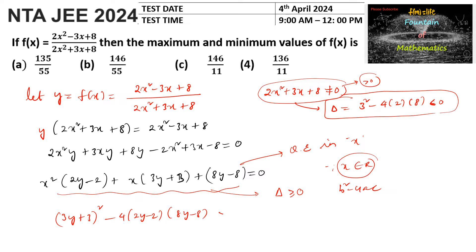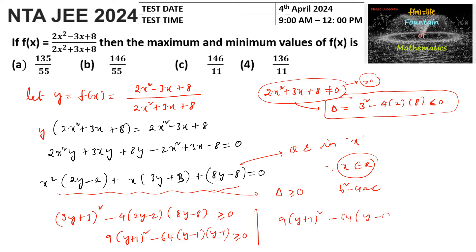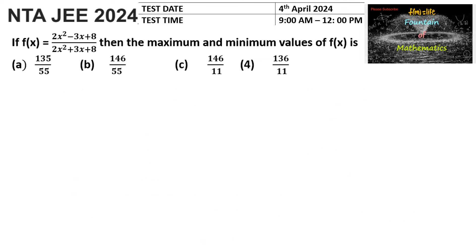Expanding, we get 9(y + 1)² - 64(y - 1)² ≥ 0, which can be written as (3(y+1))² - (8(y-1))² ≥ 0. This is in the form a² - b². Let me simplify this further.